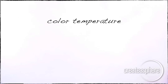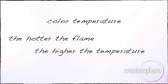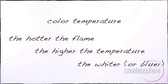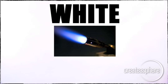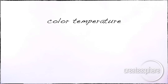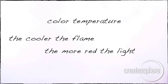Like fire, the hotter the flame, the higher the temperature, and the whiter or bluer the light that's emitted from that flame, like white hot. Conversely, the lower the temperature of the fire, the redder the light that comes off the flame.